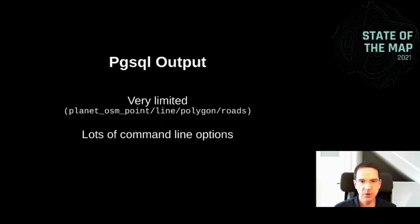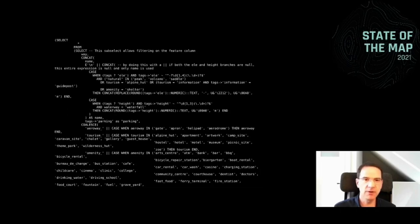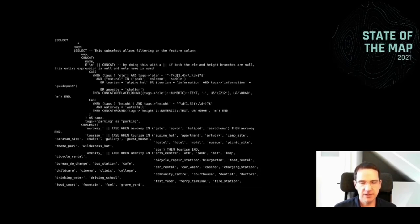The pgsql output was always very limited — you only had the four tables: planet_osm_point, line, polygon, and roads tables. You had lots of command line options, but what you could decide about where something would go was still very limited. The result was that in your stylesheets when doing rendering, you had these huge SQL SELECT statements to get the data out. Here's an example from the OSM Carto style where one query goes on for pages and pages, and there are dozens — hundreds — of those kinds of queries, making it very difficult to work with the OSM data imported with the pgsql backend.